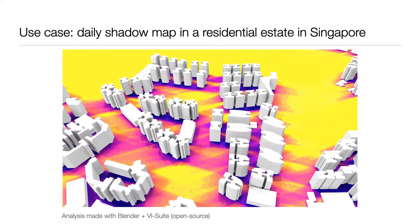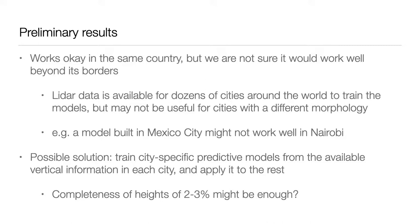For example, 3D models obtained with this accuracy level could be useful for creating shadow maps, helping understand the solar exposure of streets and thermal comfort. Still, what we did is mostly within the same country and might not work well somewhere else. We don't think we can train predictive models in Mexico and expect them to work well in Kenya. But what we are thinking is doing something different: in each city, we plan to focus on the fraction of buildings in OSM that have height information, to train city-specific regression models and then predict the heights of the remaining buildings.